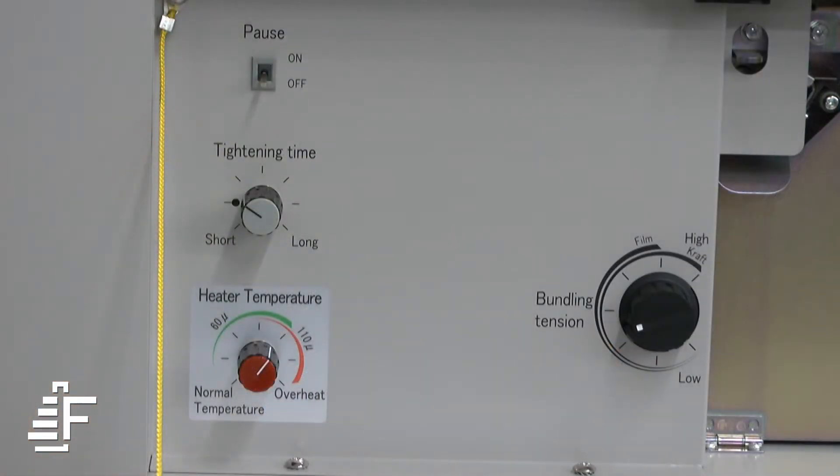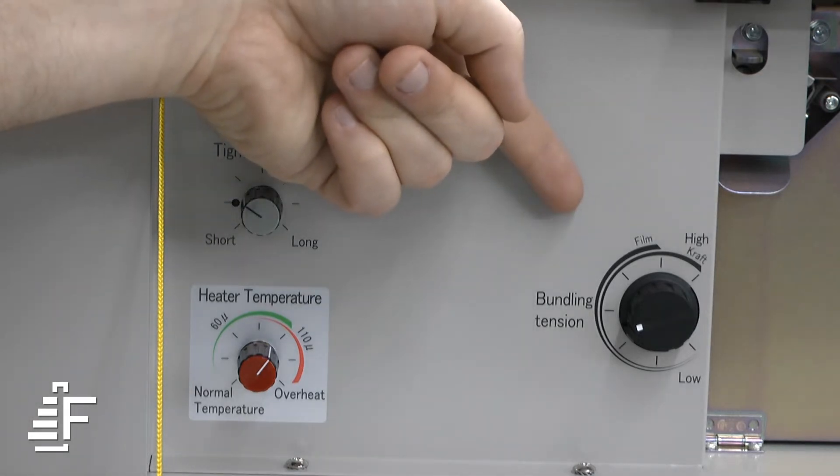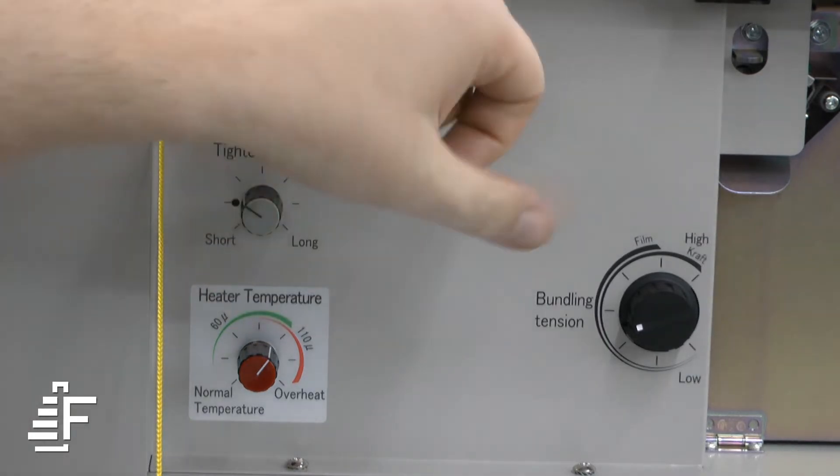Now I'm going to go through the basic controls of the machine. The pause switch, when switched on, will stop the band from feeding until the product is removed from the arch. The tightening time will hold the tension while the band is being welded. The heater temperature will control the strength of the weld. And the bundling tension knob, when increased, will increase the tension of the band.